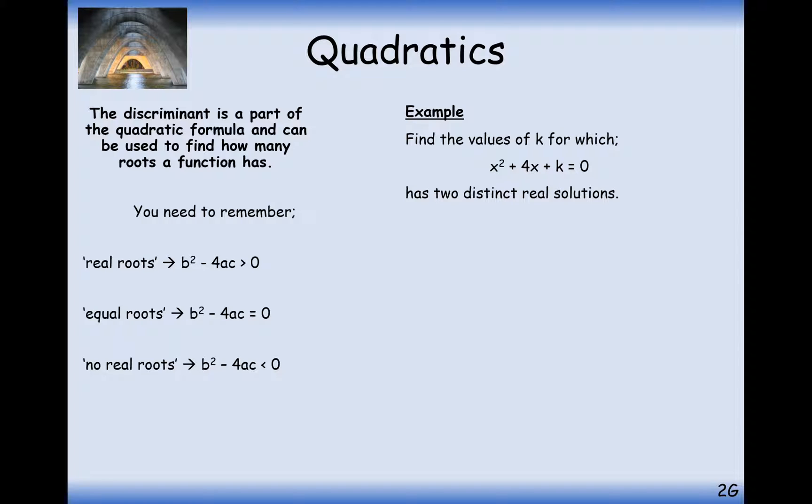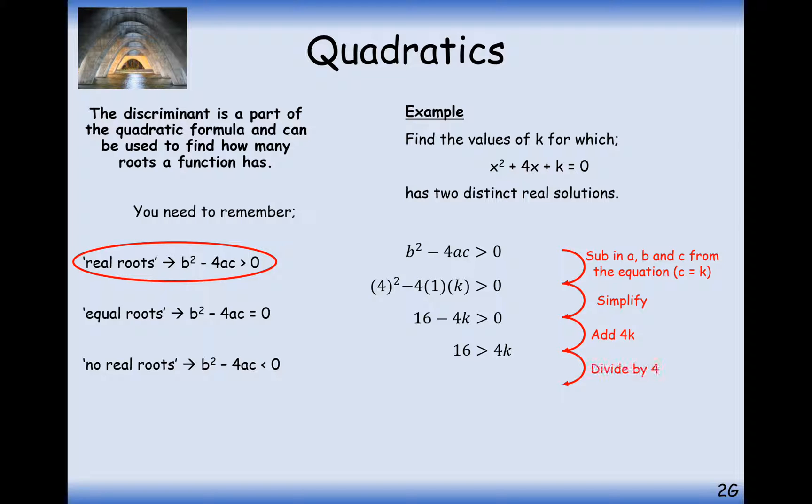Another similar expression here. This quadratic here has two distinct real solutions. So therefore, we're going to use the top one here. b squared minus 4ac is greater than 0. So in this case here, what we're going to have is substituting in the values. 16 minus 4k is greater than 0. So taking the 4k over to the other side, dividing through by 4, and you're going to get 4 is bigger than k, or k is less than 4.